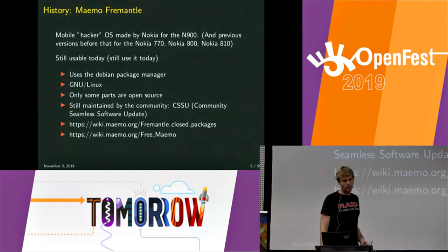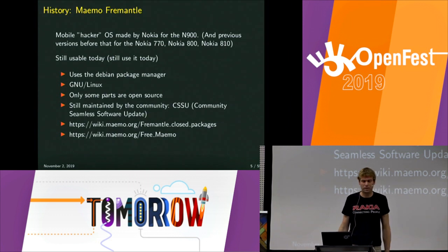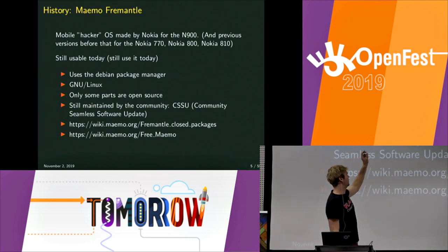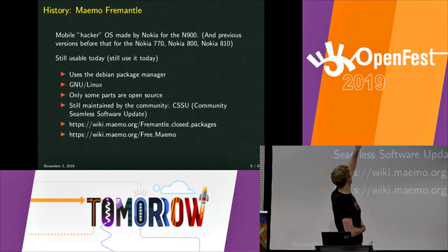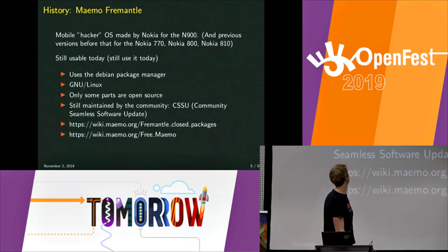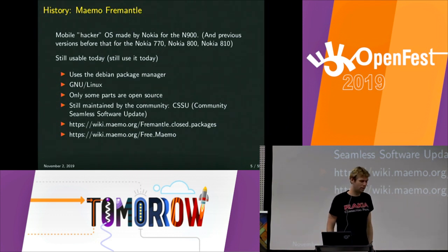A bit of history: Maemo was originally made by Nokia, and they've been doing it for a very long time. The phone I'm currently using is almost 10 years old. Before that they had the Nokia N770, 800, 810, and they all ran different versions of Maemo. The version I'm still using is called Maemo Fremantle, which is Maemo 5, and it is also based on Linux and on Debian, which made it a very good candidate to port. Only some parts of Maemo made by Nokia are open source, but it was pretty big at the time — they sold millions of devices — and then Android and iOS came, and it kind of died off.